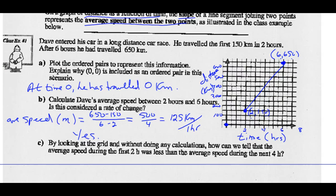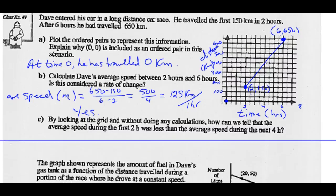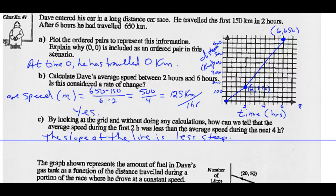By looking at the grid without doing any calculations, how can you tell that the average speed during the first two hours was less than the average speed during the next four hours? The slope of the line is less steep during the first two hours, so we have a smaller rate of change.